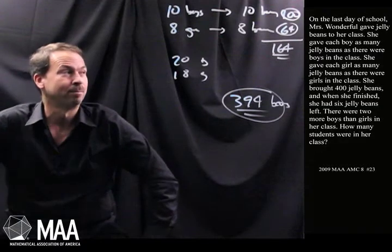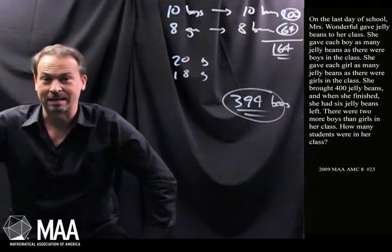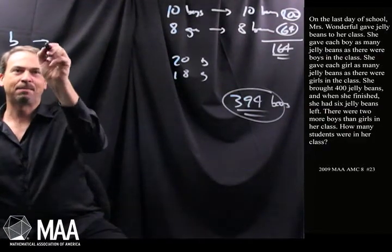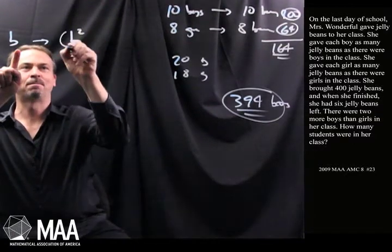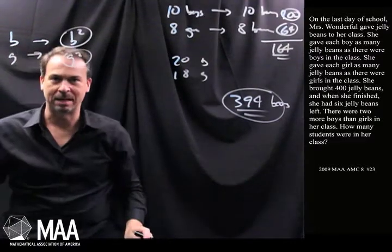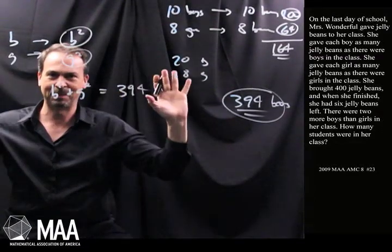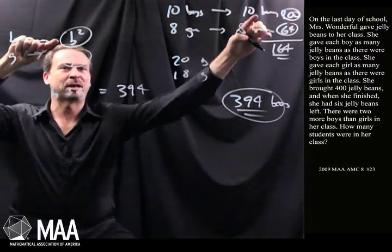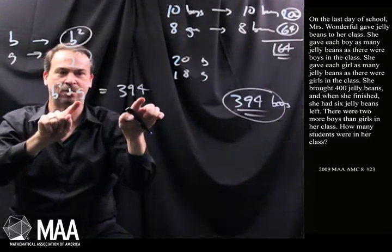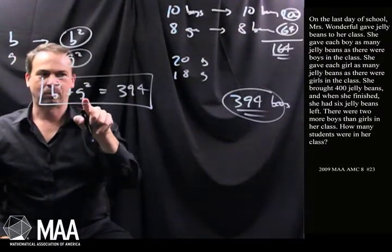Guessing and checking feels hard and I could spend a lot of time. But let me try something else. There are B boys, each getting B beans, so I get B groups of B — that's B squared beans. And the girls give G squared beans. So B squared plus G squared is meant to equal 394. It has become very algebraic all of a sudden. If it was 10 and 8, it was basically 10 squared and 8 squared. 10 squared and 8 squared is meant to be 394. So I want to find what numbers B squared and G squared add up to 394.